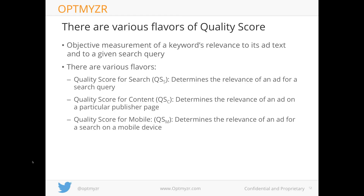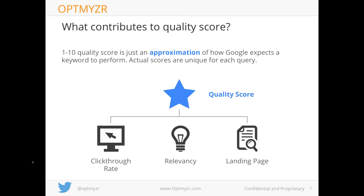There's one quality score for ads that appear on the search results page, a different one for ads on the content network — Google's display network where you show banner ads — and with mobile being so prevalent, Google has a separate quality score for mobile as well. So depending on which devices and networks you're targeting, you'll have different quality scores, each separately calculated by Google.